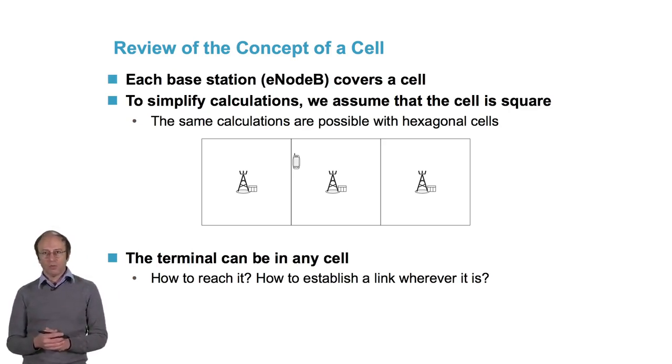The patterns we'll uncover are valid for more complex models. For example, with the model where we use hexagonal cells, which is what is usually used in the literature. The terminal, as I said, can be anywhere at any time in any cell. If someone wants to reach it, how do we establish a link to wherever it is?